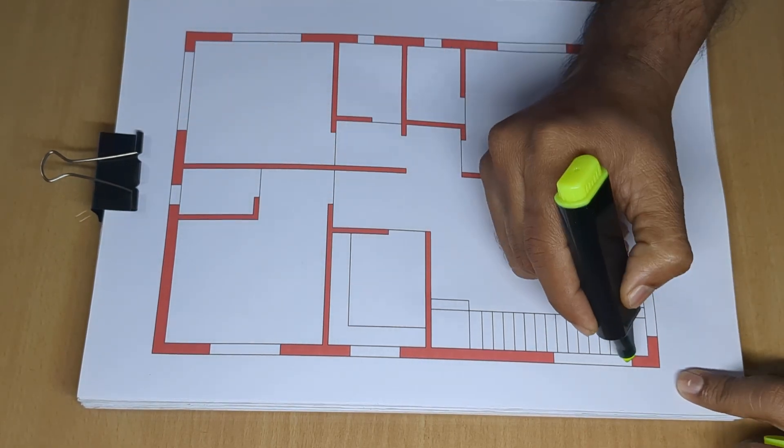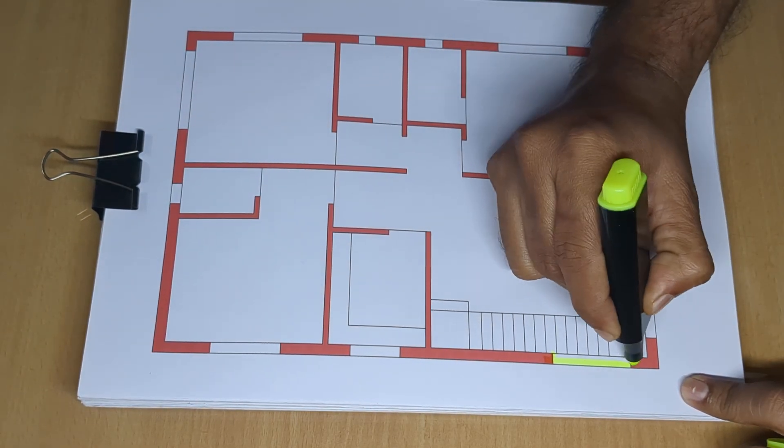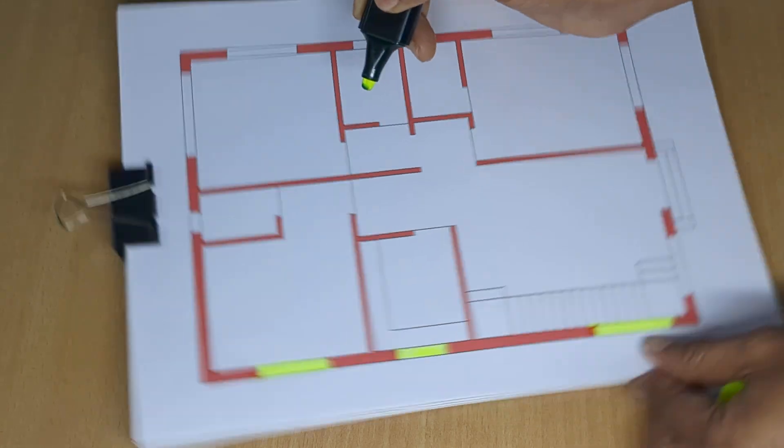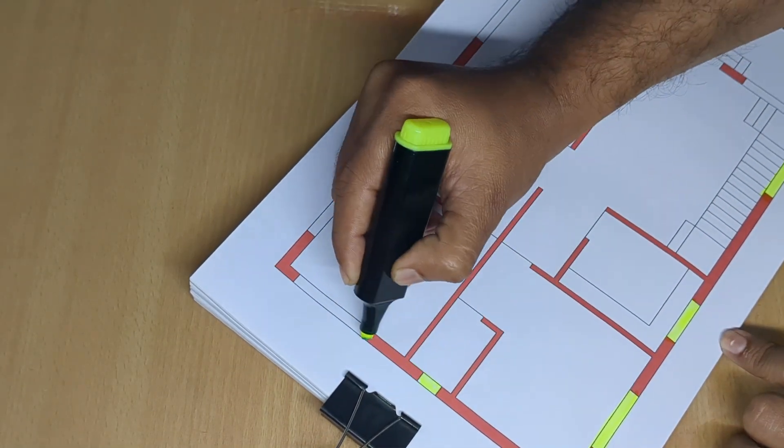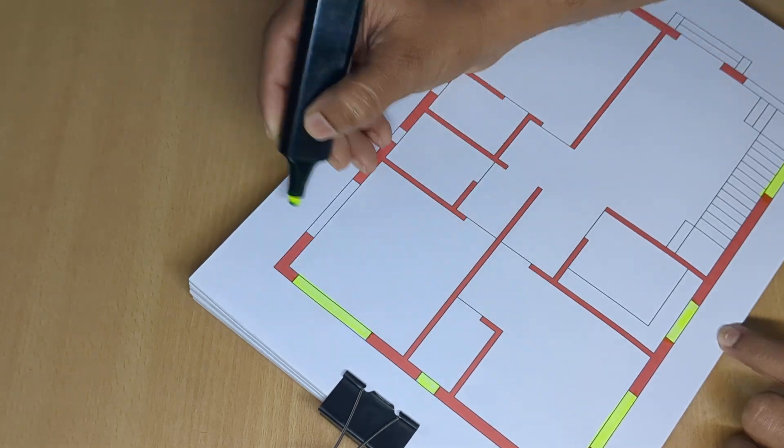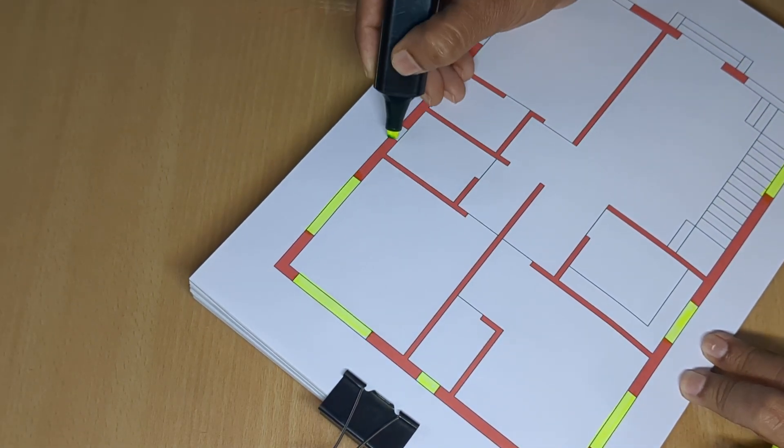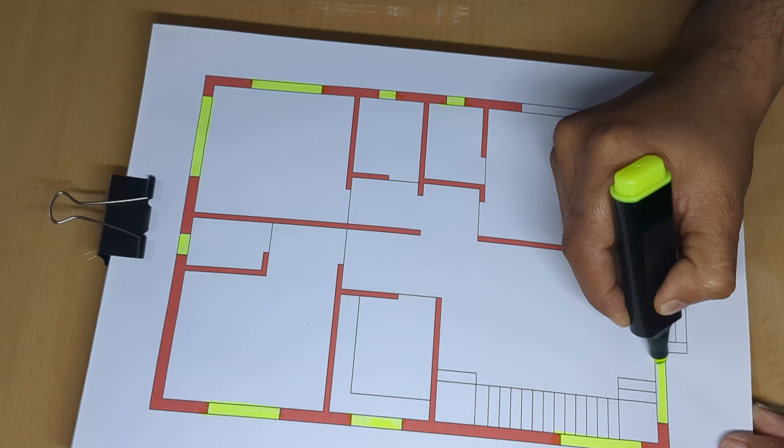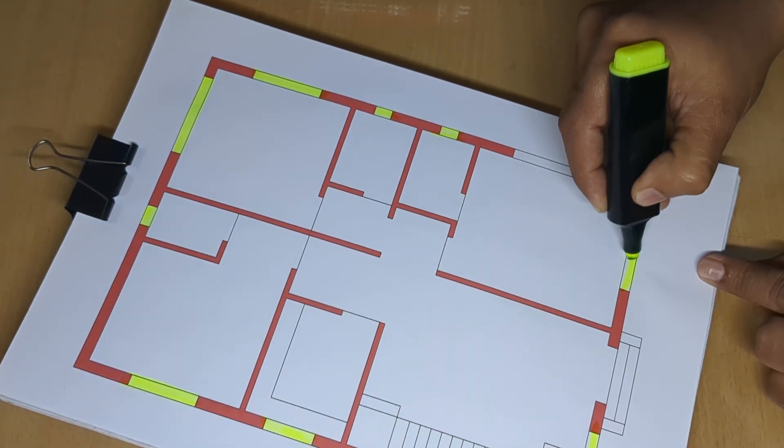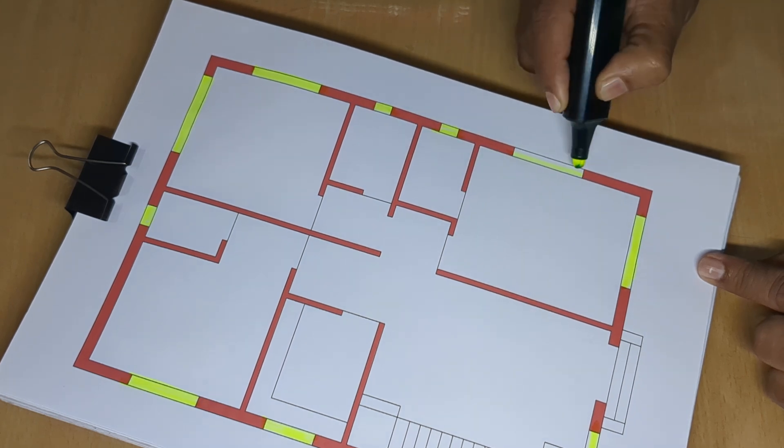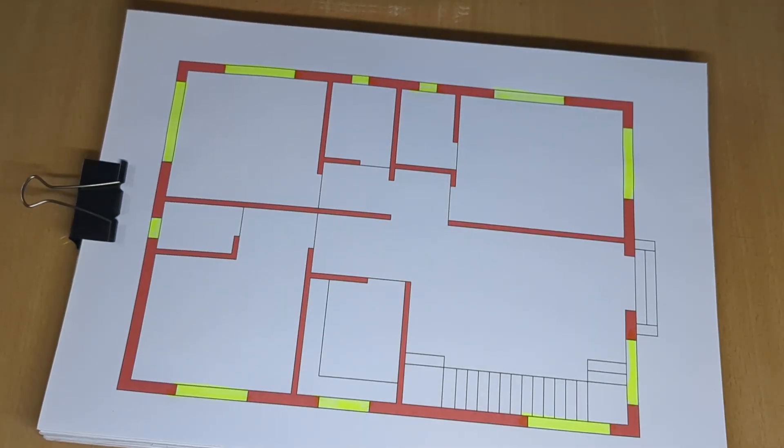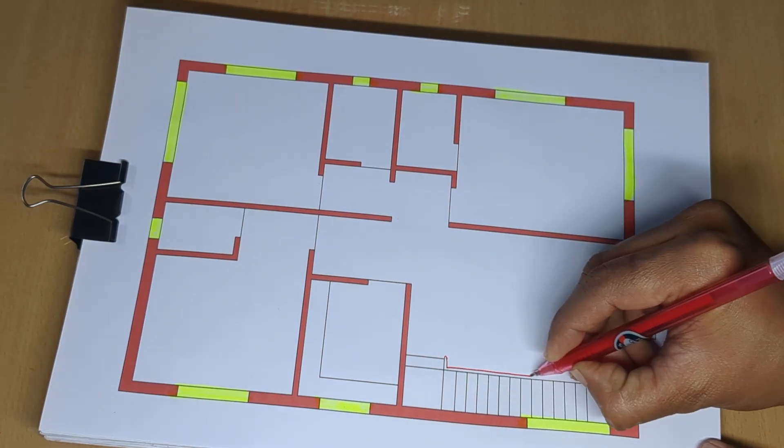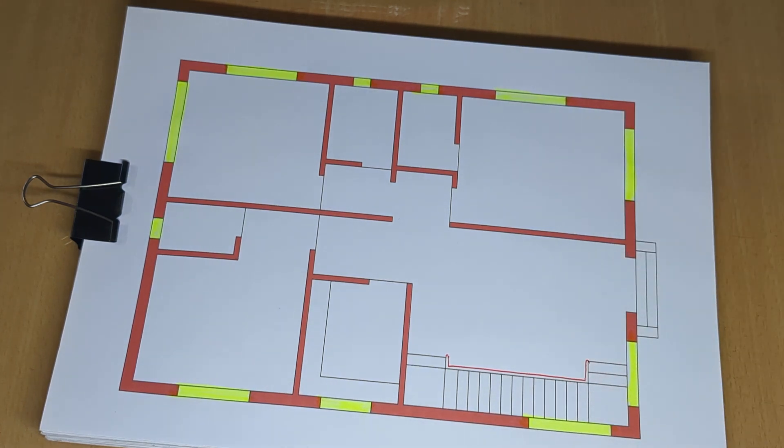This is a one, two, three bedroom floor plan. First, the window and toilet bathroom with ventilator area, next window, ventilator, window, and stair railing.